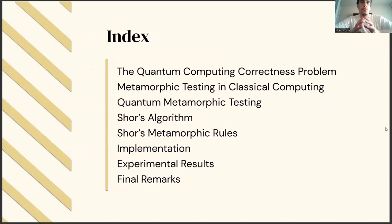As for an overview of the whole presentation, I'll firstly guide you through what's the quantum correctness problem and why it is a problem. Then I'll talk a bit about metamorphic testing in the classical world and connect it to the quantum world to achieve quantum metamorphic testing. I'll briefly tackle Shor's algorithm, which was the algorithm at hand, and explain the metamorphic rules we found for it. And lastly, I'll go through the implementation process, the results obtained, and some final remarks.